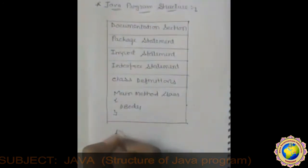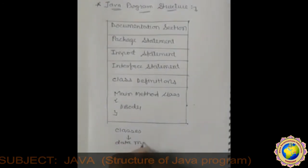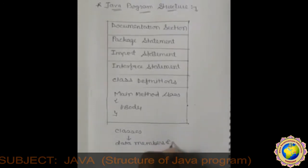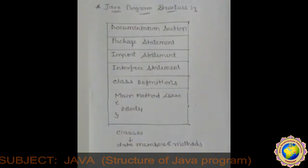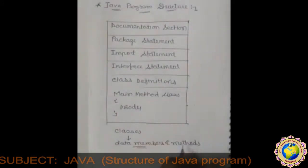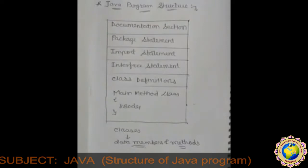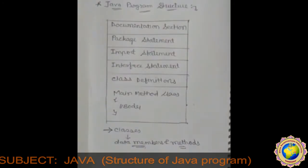Classes contain data members and methods that operate the data members of the class. Methods may contain the data type declaration and executable statements. To write a Java program, we have to first define the classes and then put them into the header.